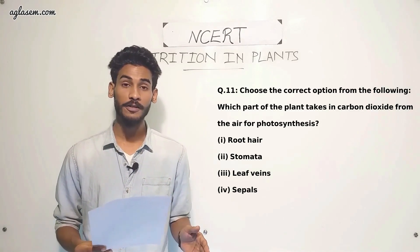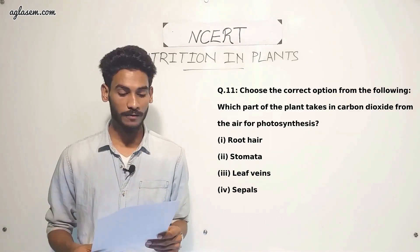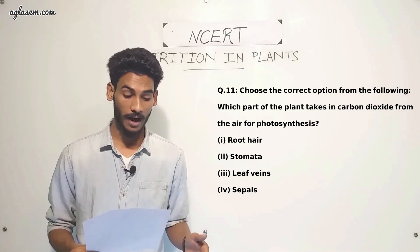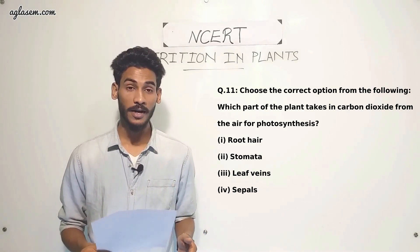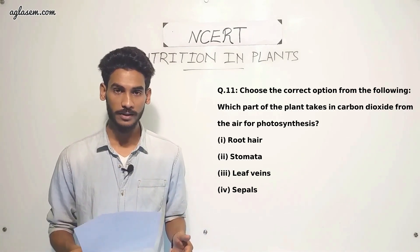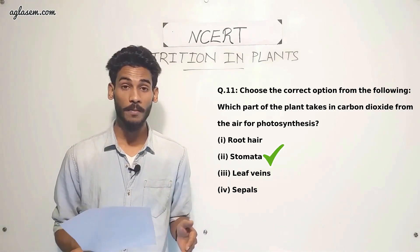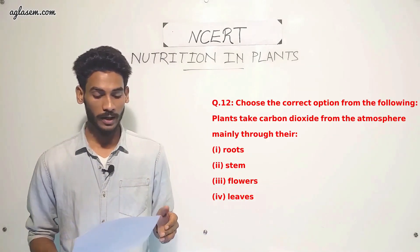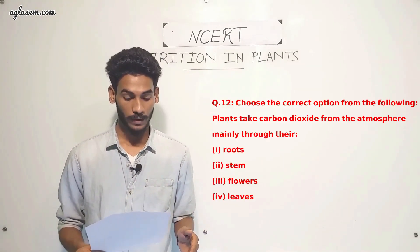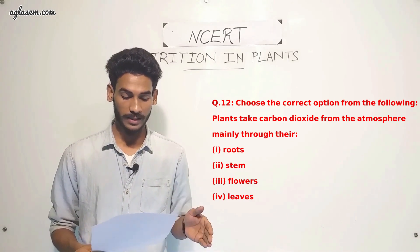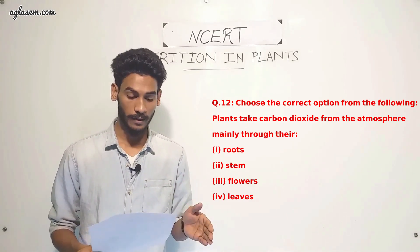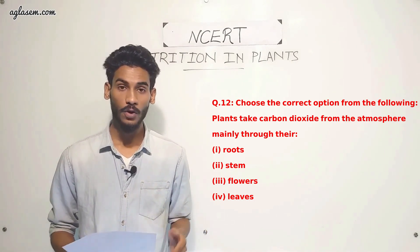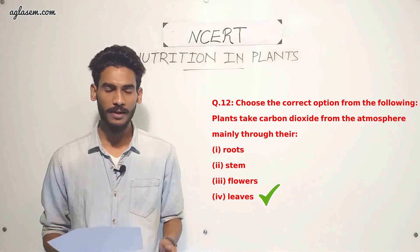Question 11: Which part of the plant takes in carbon dioxide from the air for photosynthesis? Options: root hair, stomata, leaf veins, or sepals — the answer is stomata. Question 12: Plants take carbon dioxide from the atmosphere mainly through their — options: roots, stem, flowers, or leaves — the answer is leaves.